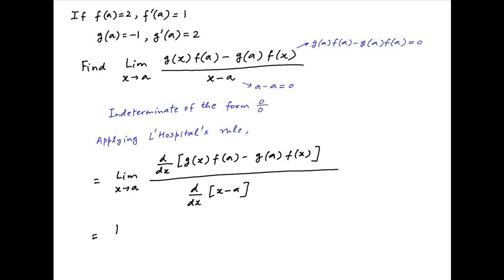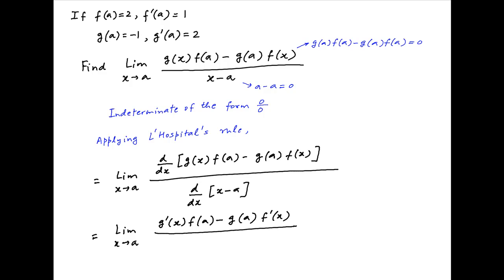This is equal to the limit as x tends to a of [f(a)·g'(x) minus g(a)·f'(x)] divided by 1. Putting x equal to a, the value of this limit is equal to g'(a)·f(a) minus g(a)·f'(a).